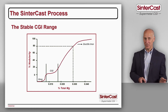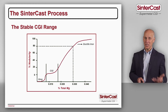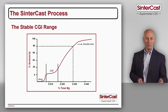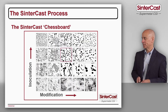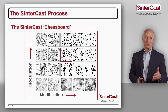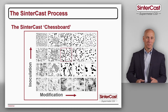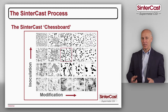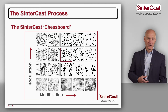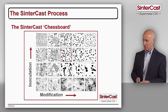As we saw in the previous video, the control of CGI depends equally on the amount of magnesium and the amount of inoculant. So at Sintercast, rather than using the magnesium S-curve, we've developed what we call the chessboard. The chessboard shows all different types of cast iron as a function of the amount of inoculant and the amount of modification — the combined effect of magnesium and rare earths, offset by oxygen and sulfur, all of the things that modify the shape of the graphite.